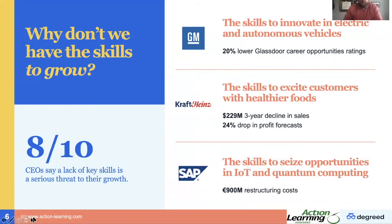Kraft Heinz is looking for the skills to excite customers about healthier food options. Over the last three years they've lost $229 million in sales. Their number one product release — the one they put the most money behind — was a product called Mayo Chup, which is literally half mayonnaise and half ketchup combined. They were hoping it would be massive sales, and it just wasn't. They're certainly looking for skills focused around innovation and leadership. And then SAP, looking at the Internet of Things, has had massive restructuring costs associated with missed opportunities to seize on the idea that everything is connected — your refrigerator, your front doorbell, your garage door opener — everything is connected to the internet.